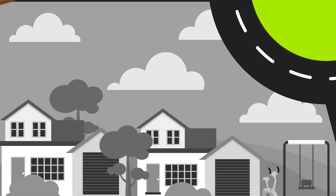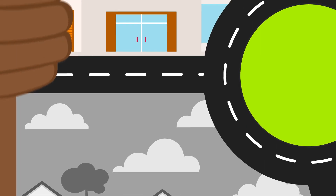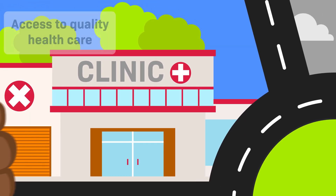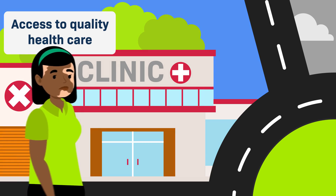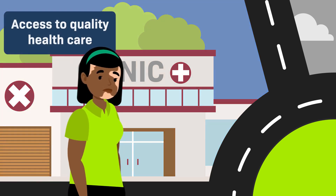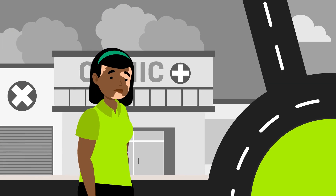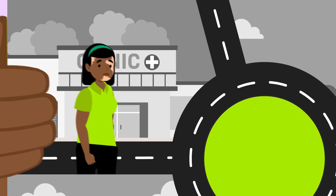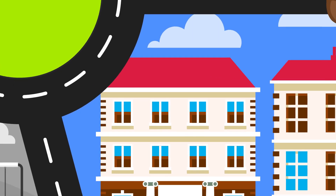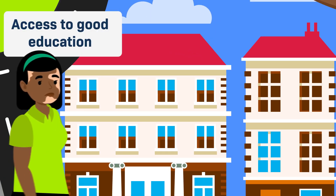Lower-income areas also have fewer quality health care facilities, and without economic stability a person cannot afford or access them. This can prevent them from visiting the doctor when they begin experiencing the early signs of type 2 diabetes, which could allow these symptoms to get much worse before they are diagnosed.